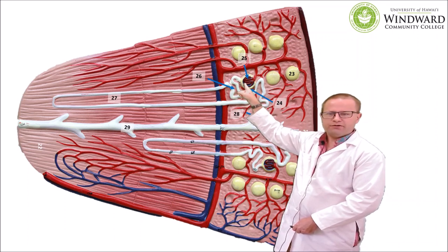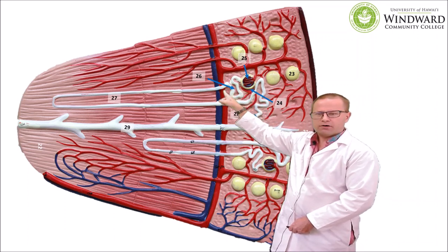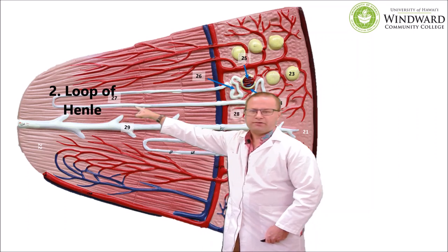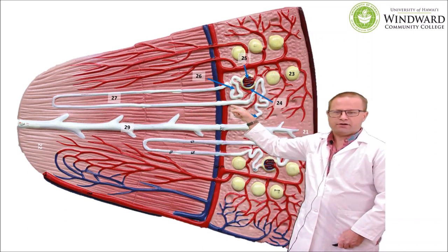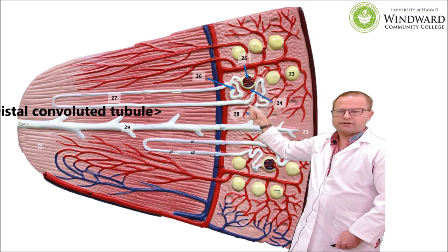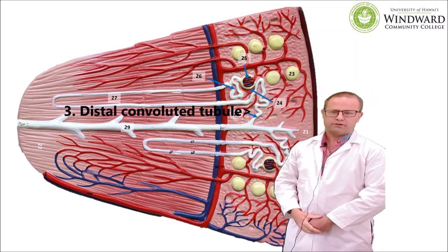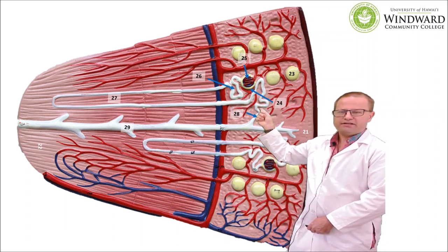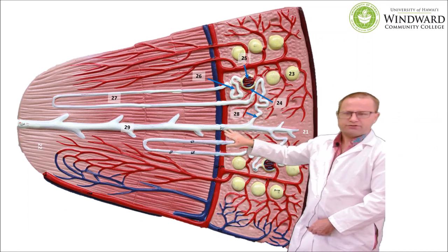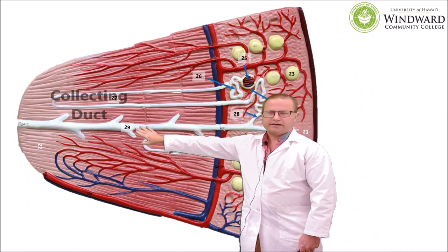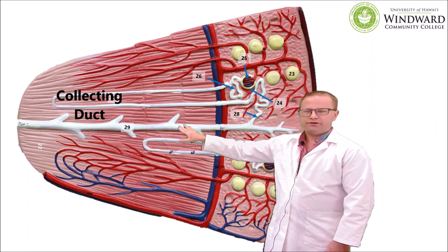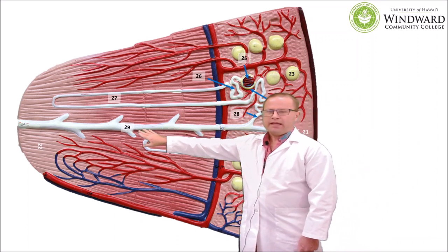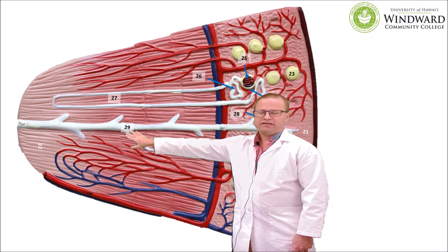The filtrate then moves through the proximal convoluted tubule down into the next part of the renal tubule, which is called the loop of Henle — we have a descending loop of Henle and then an ascending loop of Henle. That comes back up to a structure called the distal convoluted tubule — distal because it's further away from the glomerulus, and convoluted because it's wavy. We move the filtrate from the distal convoluted tubule into the collecting duct, which is the conduit to the renal papilla and eventually the renal pelvis. Any fluid remaining at this point will end up in the urinary bladder to be urinated away.